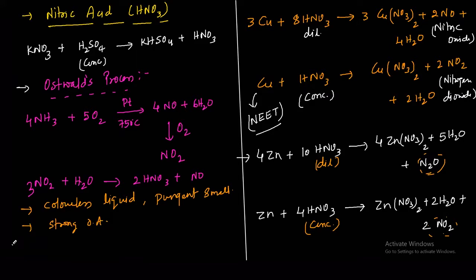Metals like chromium and aluminium form a passive film or layer of oxide on their surface, and hence do not dissolve in concentrated HNO₃.